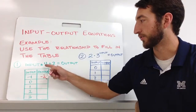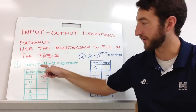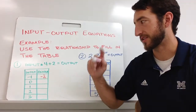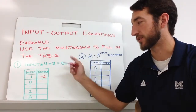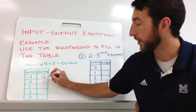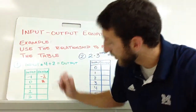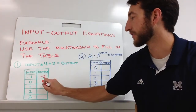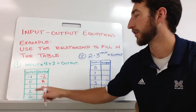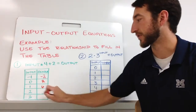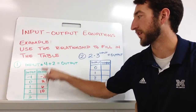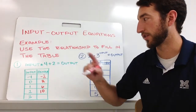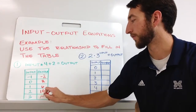Next, input zero times four plus two: zero times four is zero, plus two is two. One times four is four plus two is six. Two times four is eight plus two is ten. And three times four is twelve plus two is fourteen.